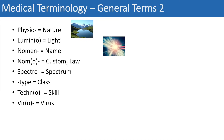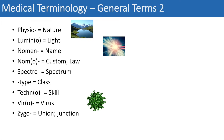The next prefix is vir or viro, which simply means virus — you can think of a virologist, someone that specializes in viral research or viral infections. Another prefix is zygo, which actually means union or junction — you can think of a zygote, the union of a sperm and egg.